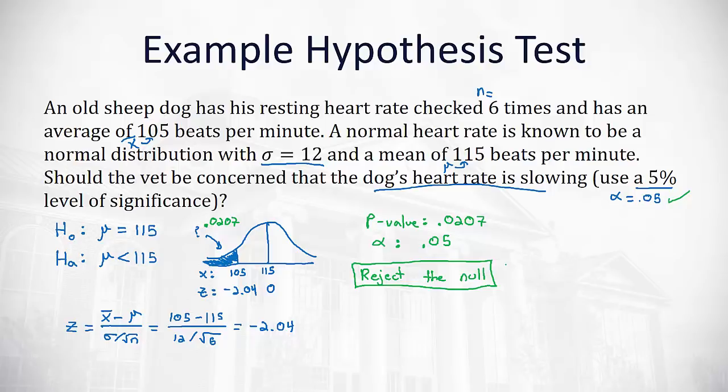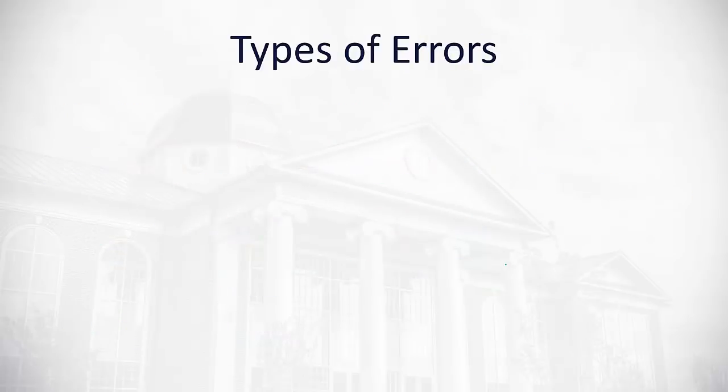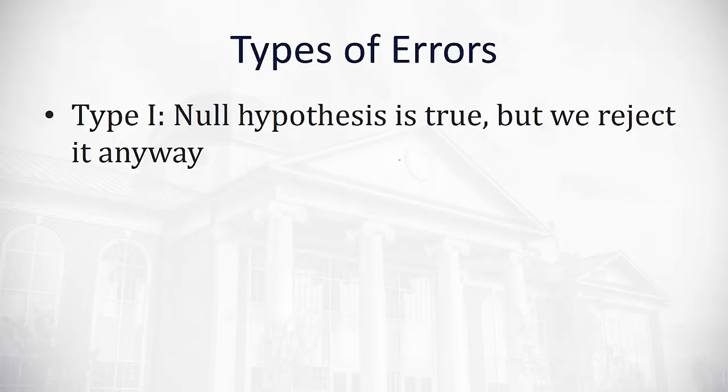Now with any statistical test like this, we use alpha at 5% to make our decision. That means we could be wrong 5% of the time. Actually, there's two different types of errors that could be calculated in a statistical test. The first is called a Type I error, and that is when the null hypothesis is actually true, but we end up rejecting it anyways. Sometimes called an alpha error because it's got a probability of alpha. This is exactly what might have happened in our situation. We rejected the null hypothesis, but we don't know if it's true or not because we didn't sample every single possible heart rate. We just took six heart rates. So there's a chance, 5% in our case, or alpha, that the null hypothesis is true and we rejected it anyways.